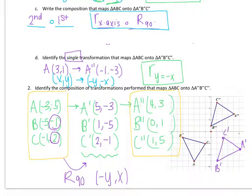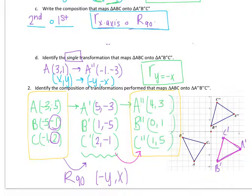The prime triangle I just drew appears to be in the same orientation as the double prime triangle — facing the same direction. B prime and B double prime are both down in the bottom corner; same with C prime and C double prime, and A prime and A double prime. So for the next transformation, I want to figure out how to slide this prime triangle on top of the double prime triangle. It looks like I'm moving left and then up.